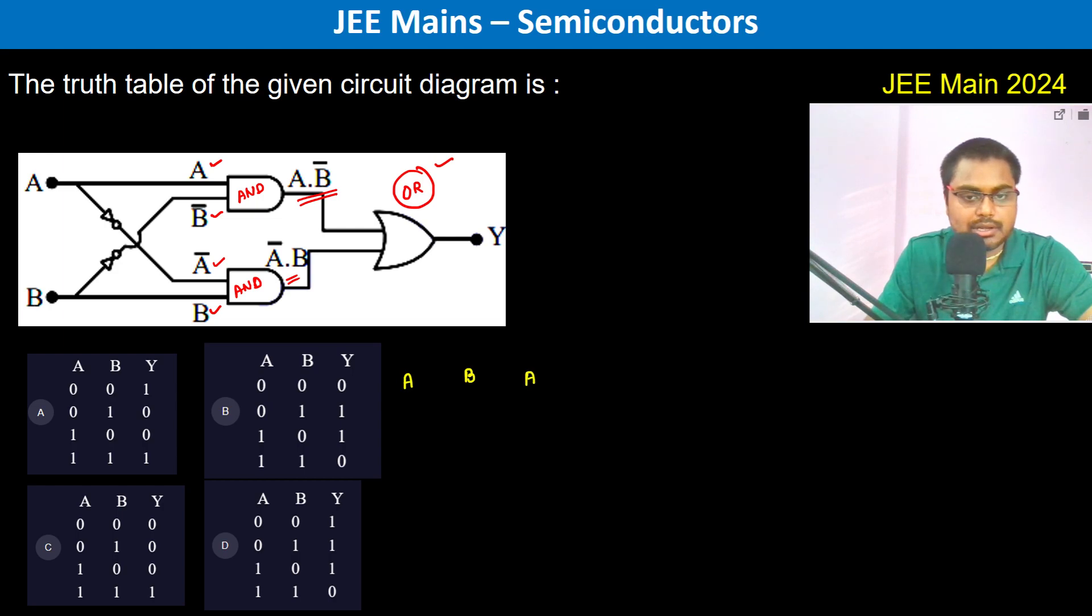have A bar, B bar, then we have A dot B bar, that is A and B bar, and then A bar and B, and then we have A dot B bar OR A bar dot B, A bar dot B. So zero zero, one one, zero one.